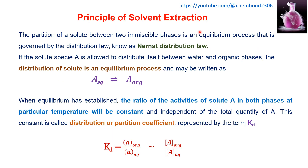The principle of solvent extraction is that the partition of solute between two immiscible phases is an equilibrium process governed by the distribution law known as Nernst's distribution law. If a solute species A is allowed to distribute itself between water and organic phases, the solute species A dissolved in one of these phases more than the other will distribute itself between the two phases and the distribution is an equilibrium process.